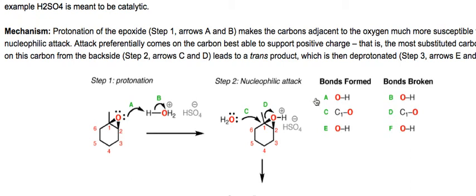The first step in this mechanism is we're taking our epoxide and it has lone pairs on the oxygen and the lone pairs are somewhat nucleophilic. We treat our epoxide with acid. The lone pair on the oxygen is going to donate a pair of electrons to the hydrogen of the acid and we're going to end up with a protonated epoxide.